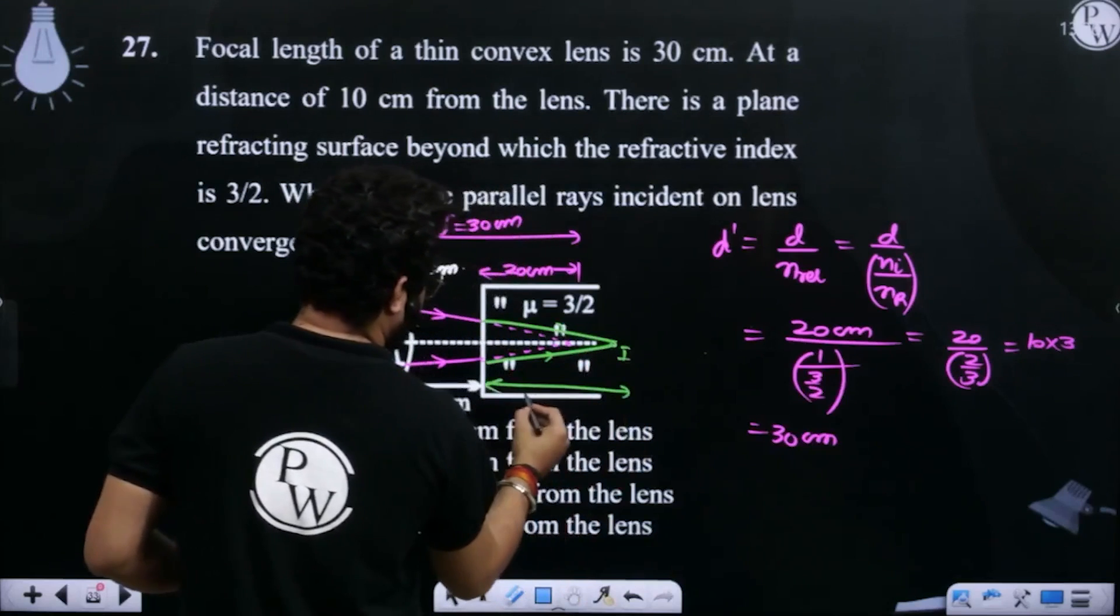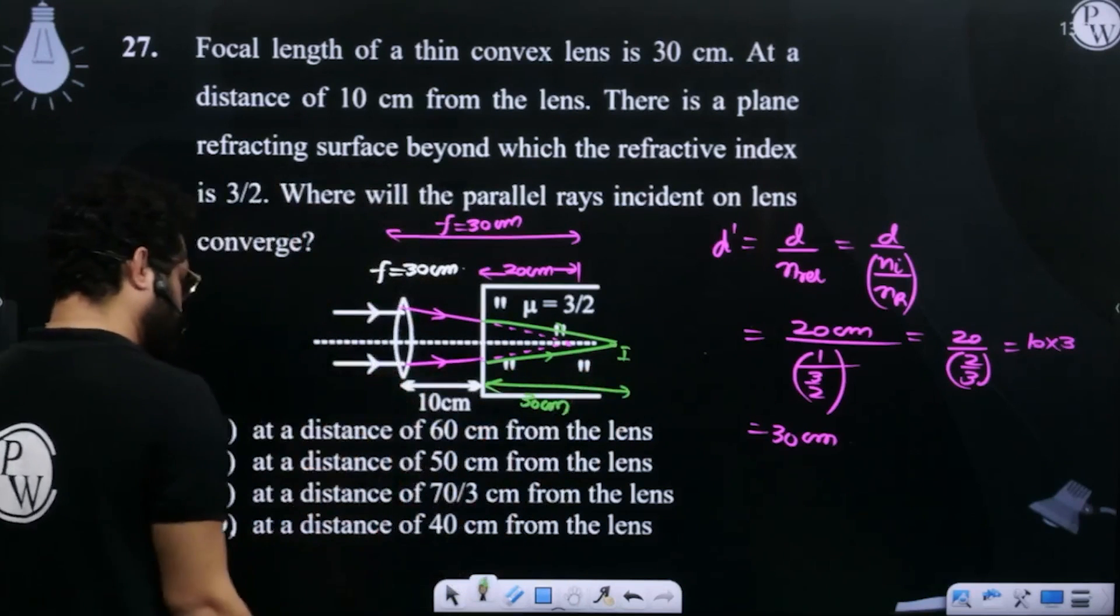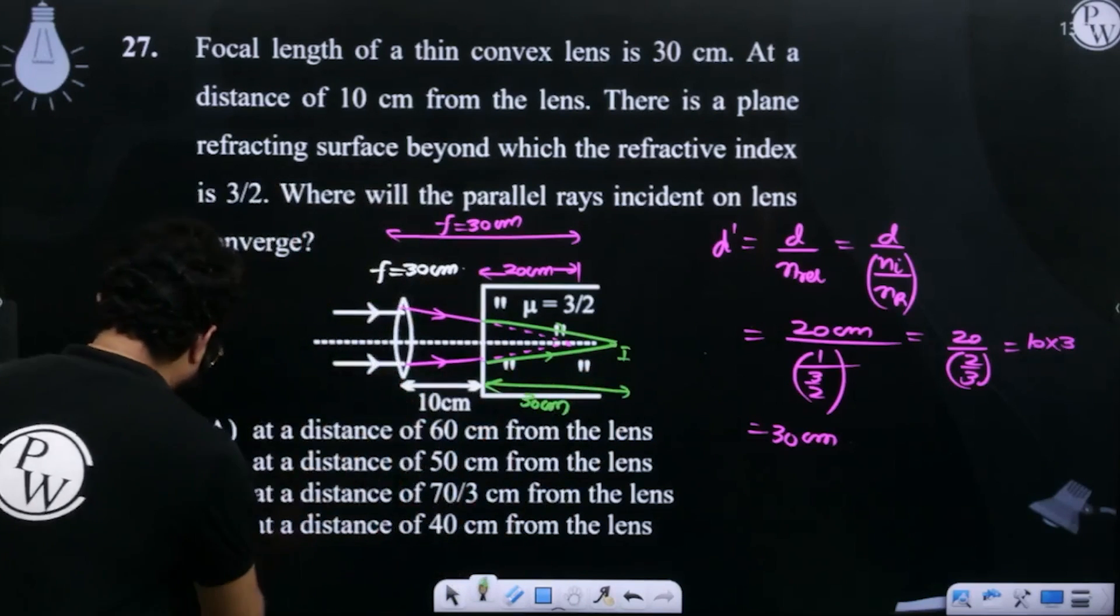The depth is 30 cm. So, the distance is 40 cm. It is 40 cm from the lens.